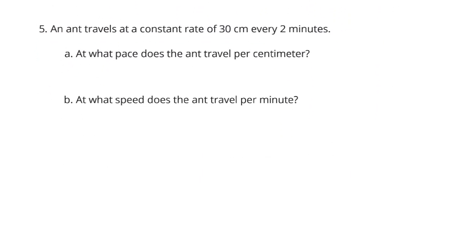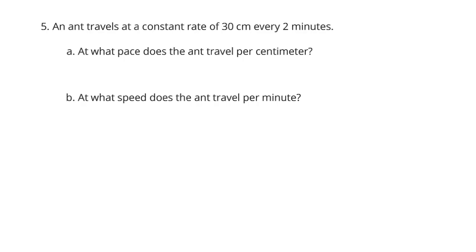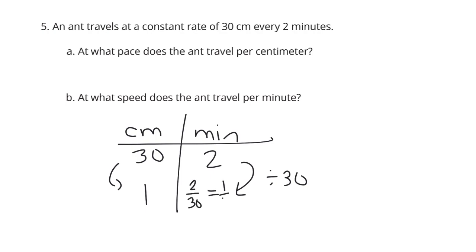Question five. An ant travels at a constant rate of 30 centimeters every two minutes. At what pace does the ant travel per centimeter? I love tables. I just think our tables can really help things set up here. 30 centimeters, two minutes. We're trying to get per centimeter. How do I get from 30 to 1? I'm dividing by 30. So 2 divided by 30 is going to be 2 thirtieths, which is 1 fifteenth minute per centimeter. If you divided this in a calculator, you would get 0.06 with that sixth repeating. So, I would just say 1 fifteenth minute per centimeter.